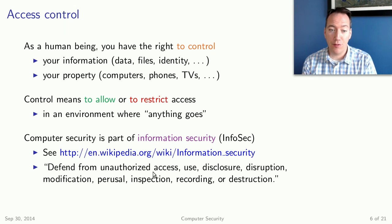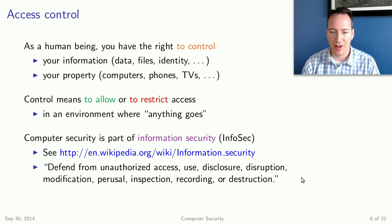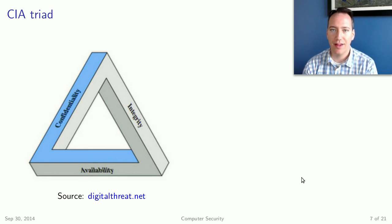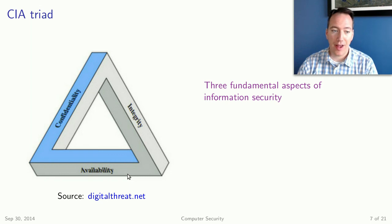Computer security itself is a branch of information security. A simple definition is that we want to defend from unauthorized access, use, disclosure, disruption, etc. Security analysts think about three main goals called the CIA triad — and note that CIA here is not Central Intelligence Agency. You really should memorize all three of these terms. The three fundamental aspects are confidentiality, integrity, and availability.